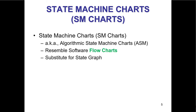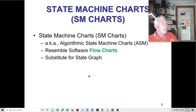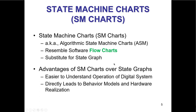SM charts — you've seen these because I covered them in logic design. There were probably two or three problems involving state machine charts on your final exam, and again in the review. So this can't be brand new. They're called SM charts, state machine charts, or algorithmic state machine charts — ASMs. They look like a flowchart, but they're not really a flowchart. They are a complete substitute for a state graph: if you have a state graph you can write the SM chart, and vice versa.